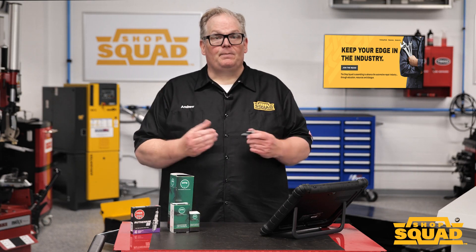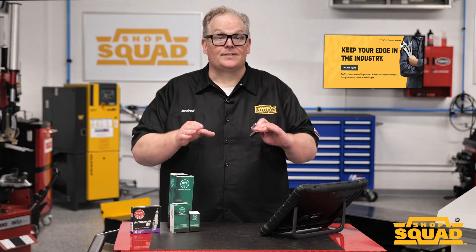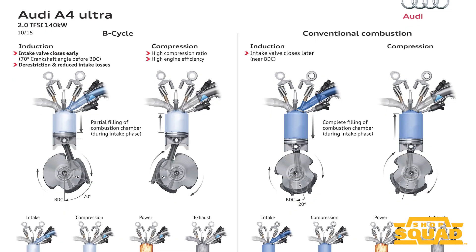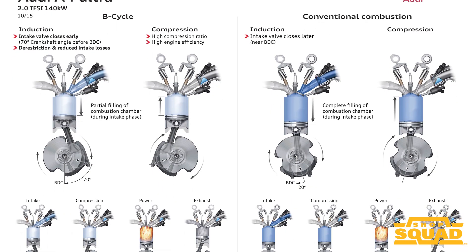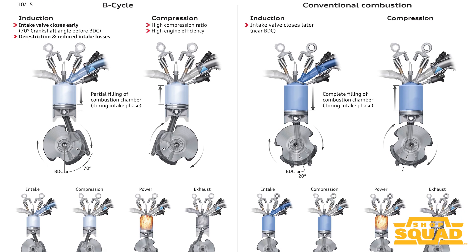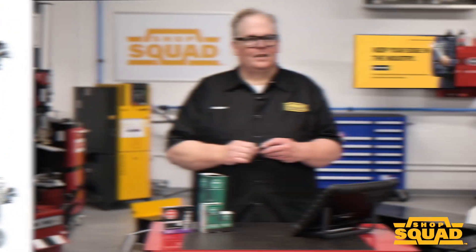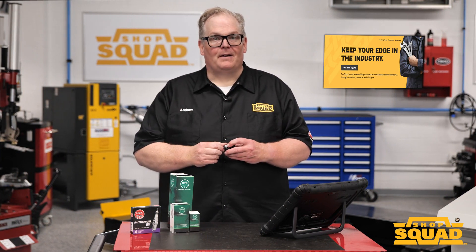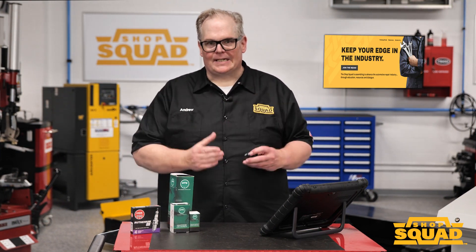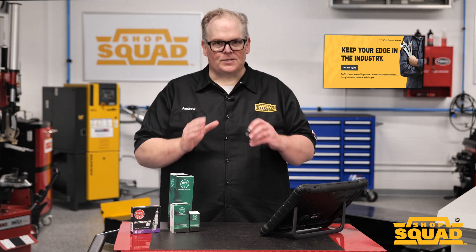The critical piece of information to understand is that crankshaft speed is not constant. Instead, the speed changes as the pistons travel up and down in their respective cylinders during the combustion cycle. You can't see it with your eye or in the rev counter, but the crankshaft position sensor detects these small changes in speed.